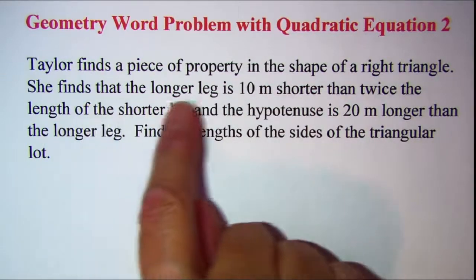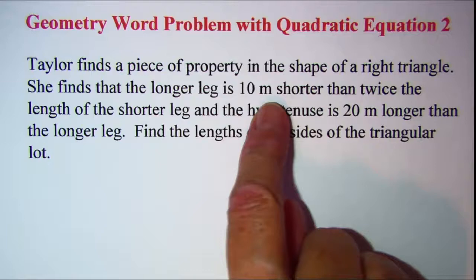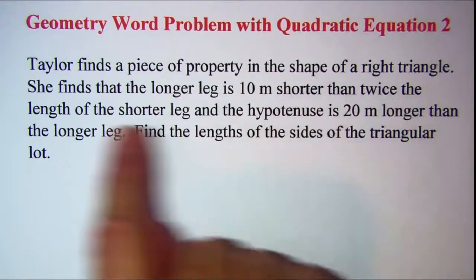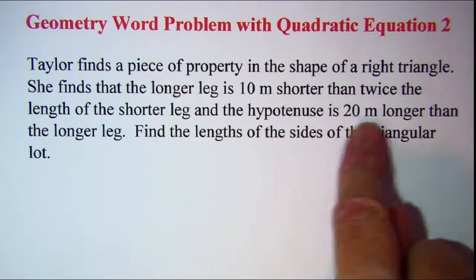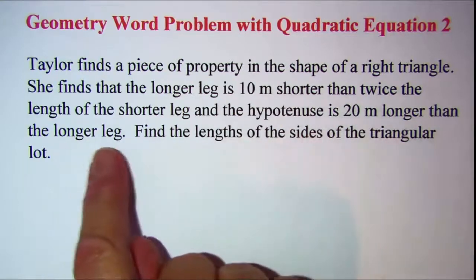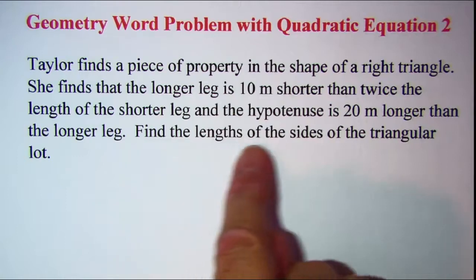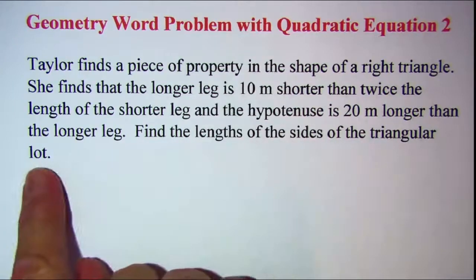She finds that the longer leg is 10 meters shorter than twice the length of the shorter leg and the hypotenuse is 20 meters longer than the longer leg. Find the lengths of the sides of the triangular lot.